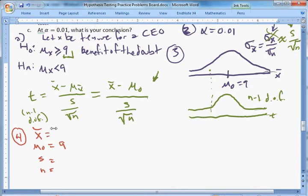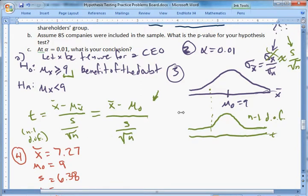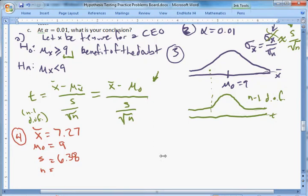So, here we go, 7.27, 6.38. Now we just need our sample size. Let's see, okay, up here in part b it says, assume 85 companies were included in the sample. What is the p value for your hypothesis test? And it goes 85.